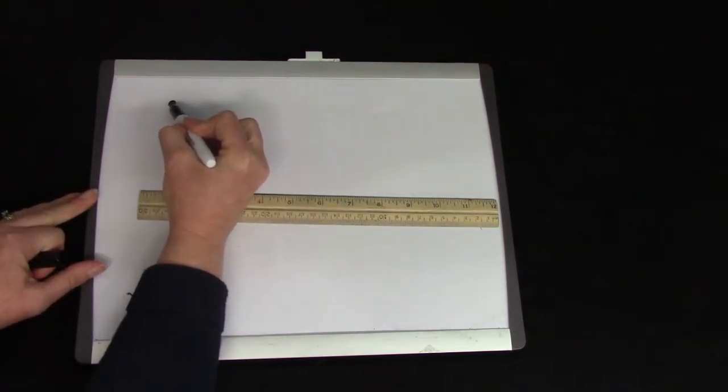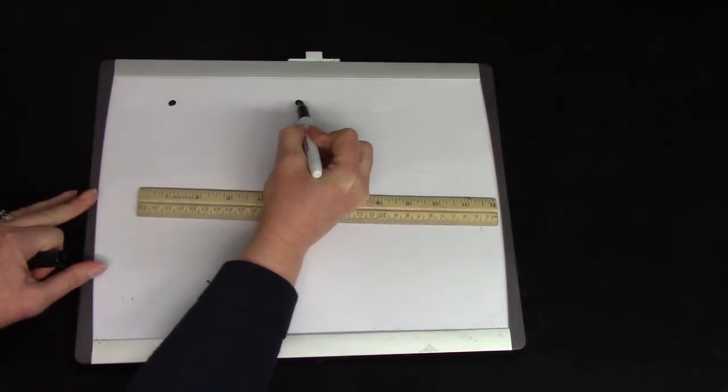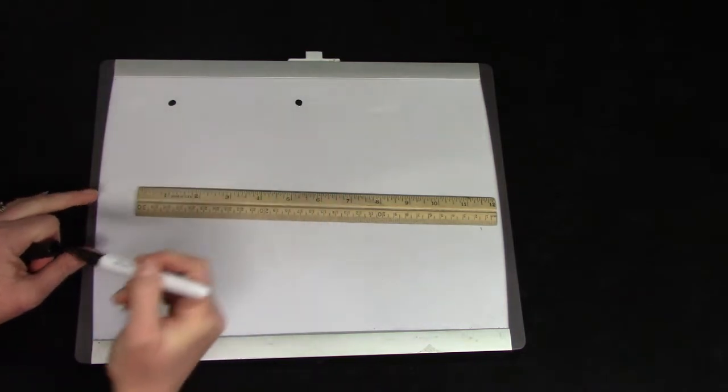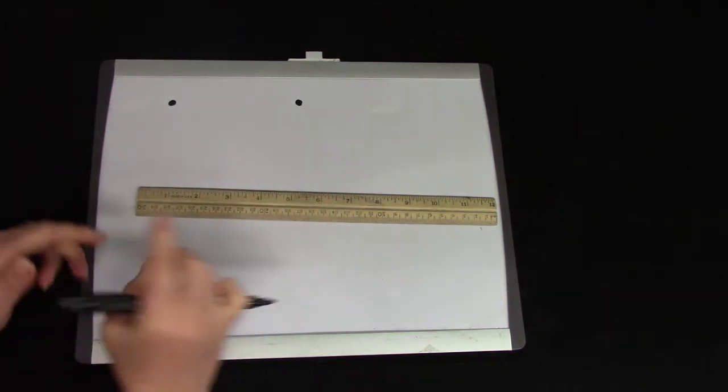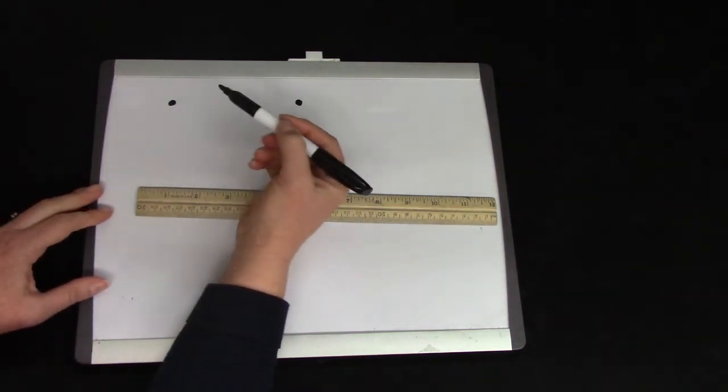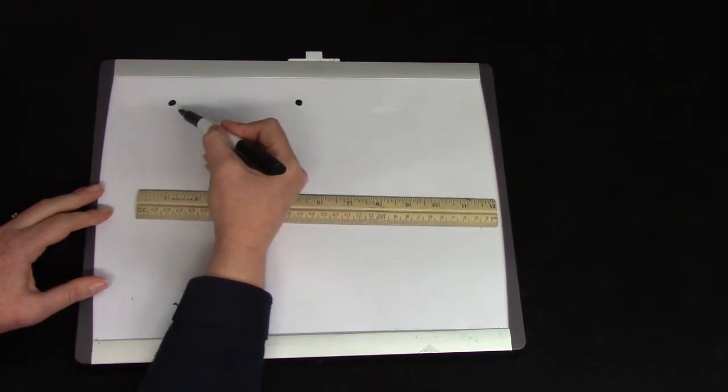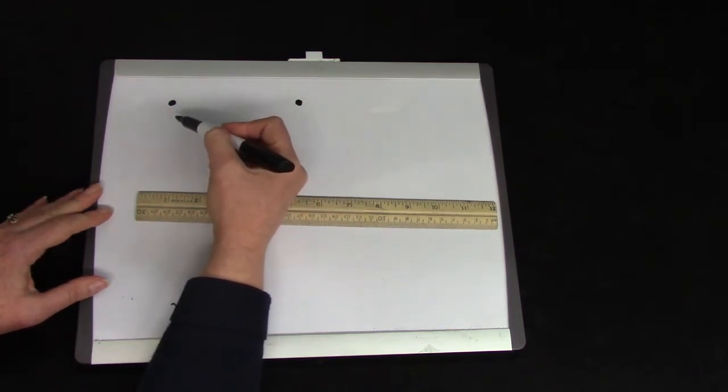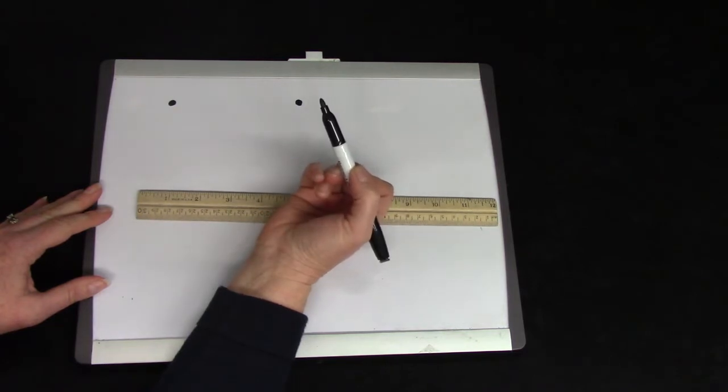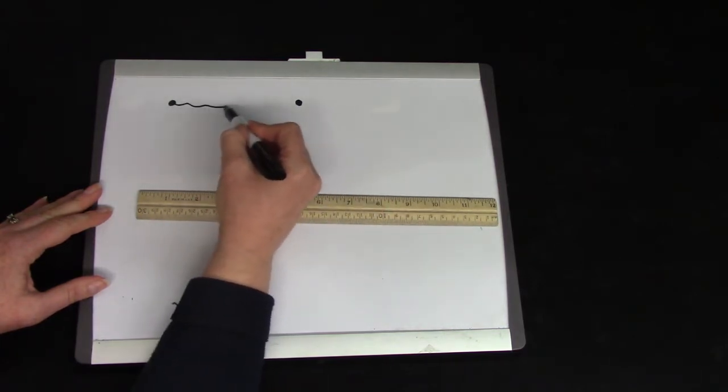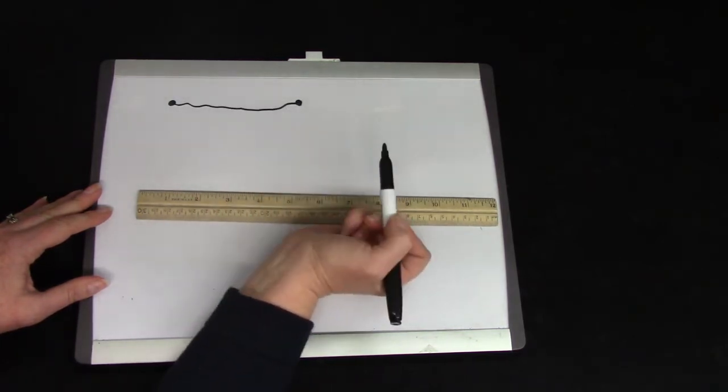If I have a dot here and a dot here, and I want to draw a very straight line between them, I could try to do it without a ruler or something that was very straight, but it might be hard for me. And my line might end up looking really wiggly.